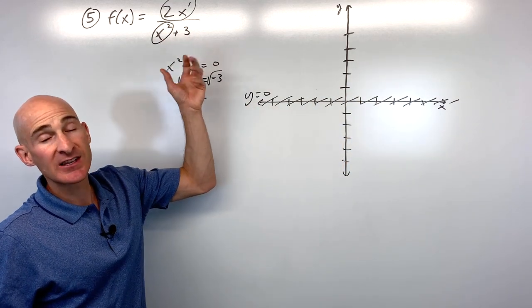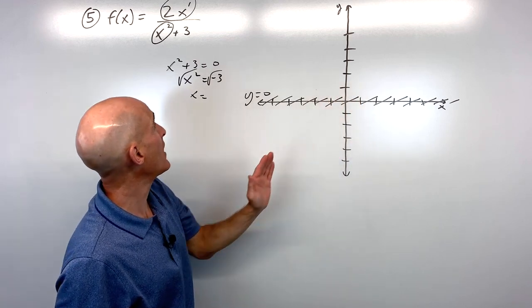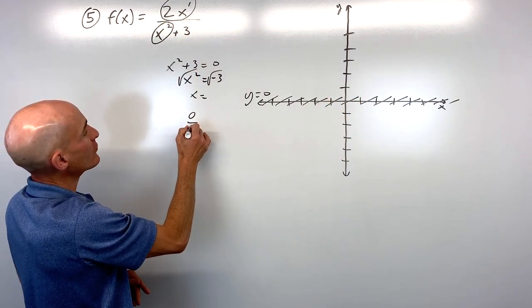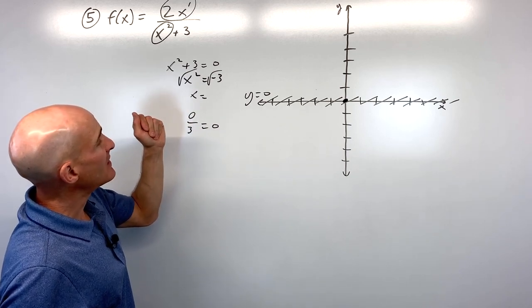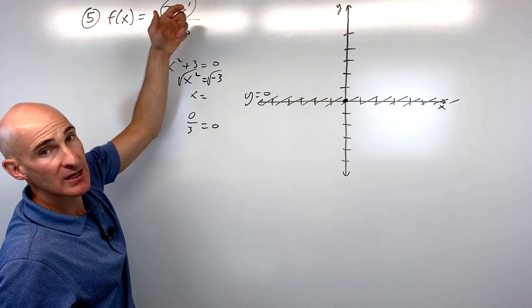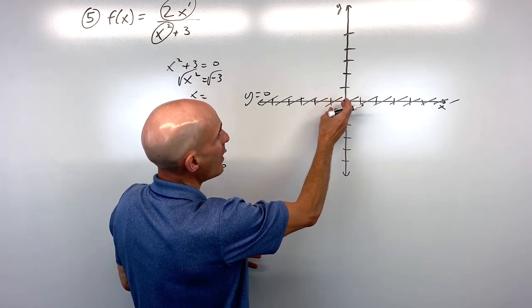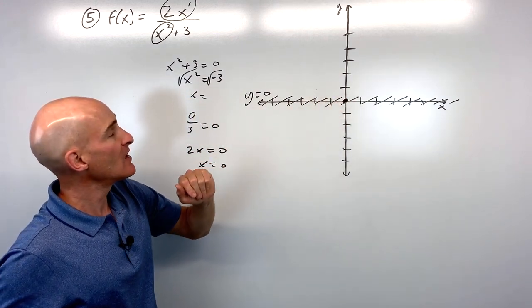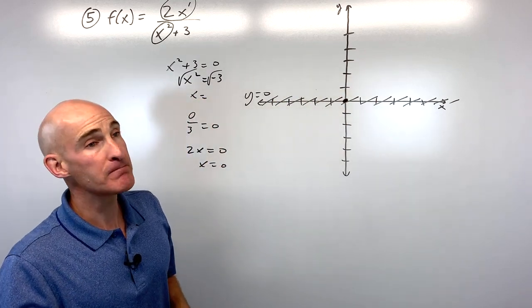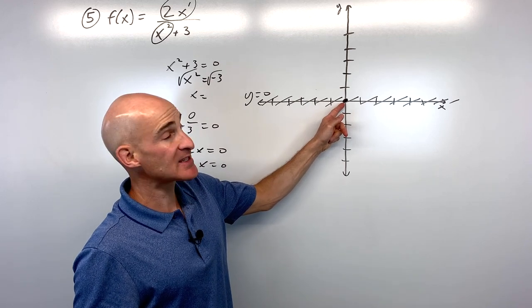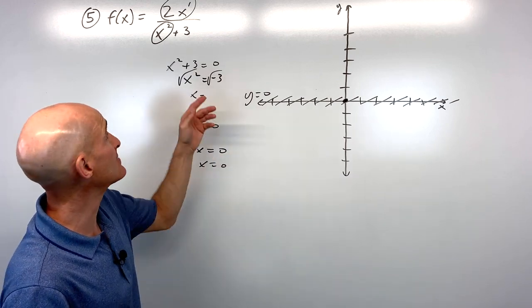For the y-intercept, plug in x=0: 0/3=0. For the x-intercept, set 2x=0: x=0. So both intercepts are at the origin. This is interesting because the graph crosses the horizontal asymptote at that point — and remember, you can cross a horizontal or slant asymptote, just not a vertical one.